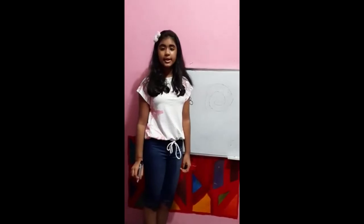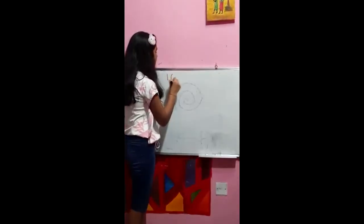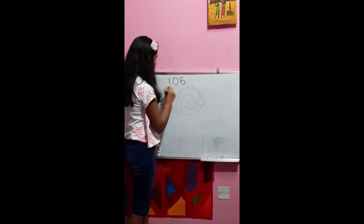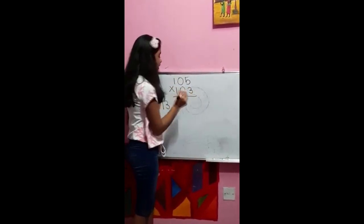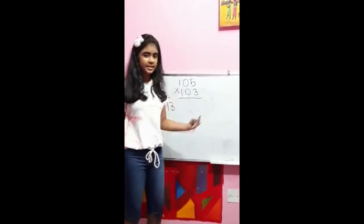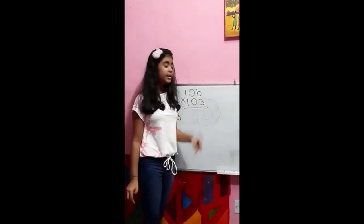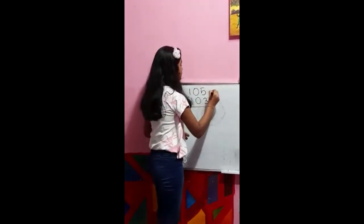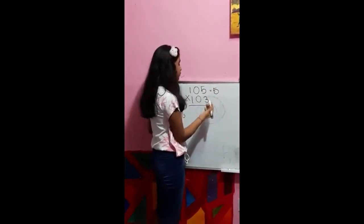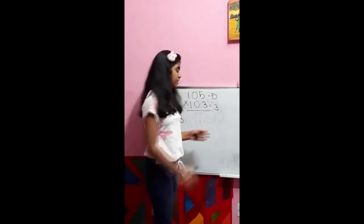Next, we're going to be doing the base method with positive deviation. So let's pick our numbers. The base is basically 10, 100, 1000, 10,000, 1,000,000, etc. Our deviation is: the number minus the base equals the deviation. So 105 minus 100, which is the base, gives you 5. So 5 is our deviation. And here we do the same thing and we get 3. You're going to multiply these two numbers to get the right part — 5 times 3 is 15.